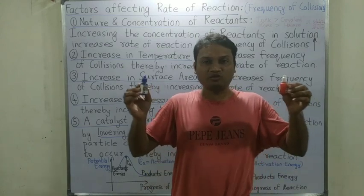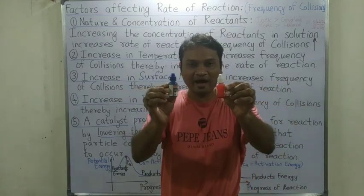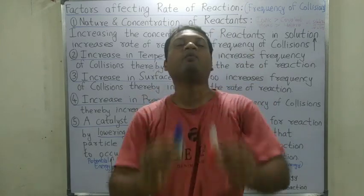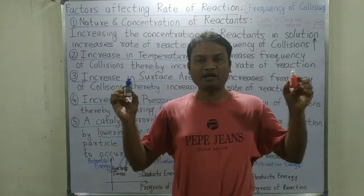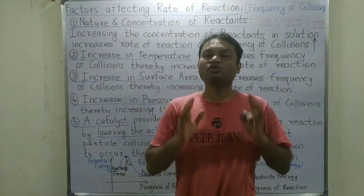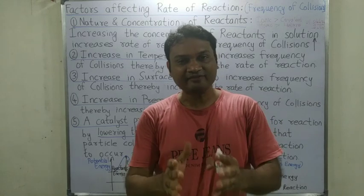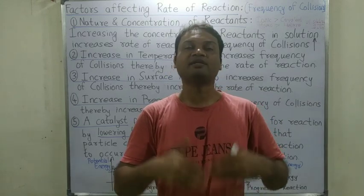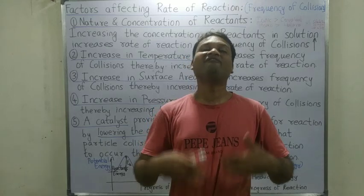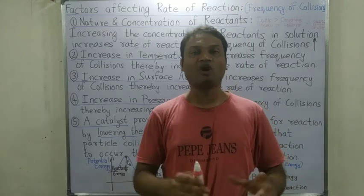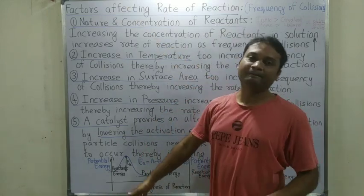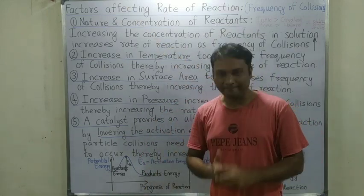It is obvious — if two reactants collide slowly after a long time, the product will also form after a long time. But if two reactants collide quickly, the product will form quickly. So the factor responsible for the speed of reaction, or the rate of reaction, is the frequency of collisions of reactants. Let us see one by one how this factor plays a role in each parameter.